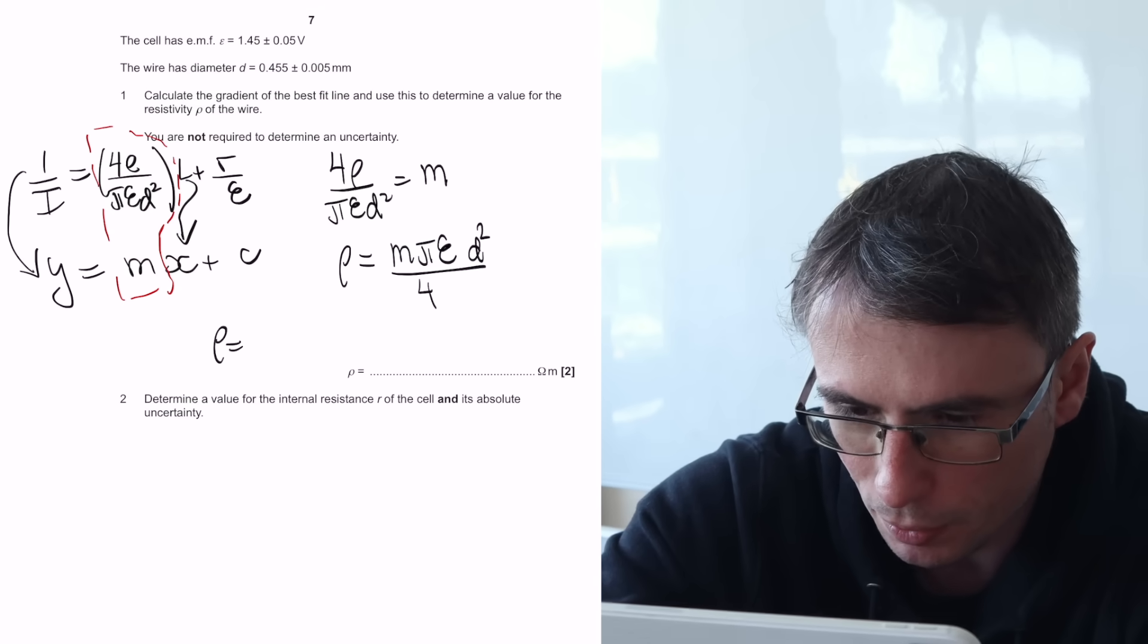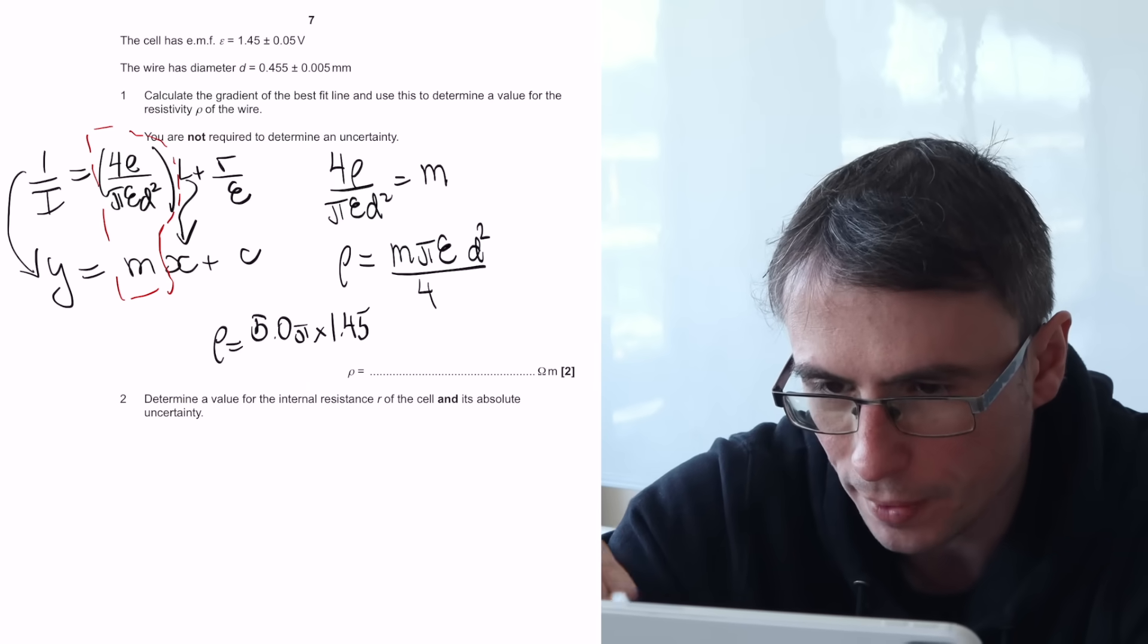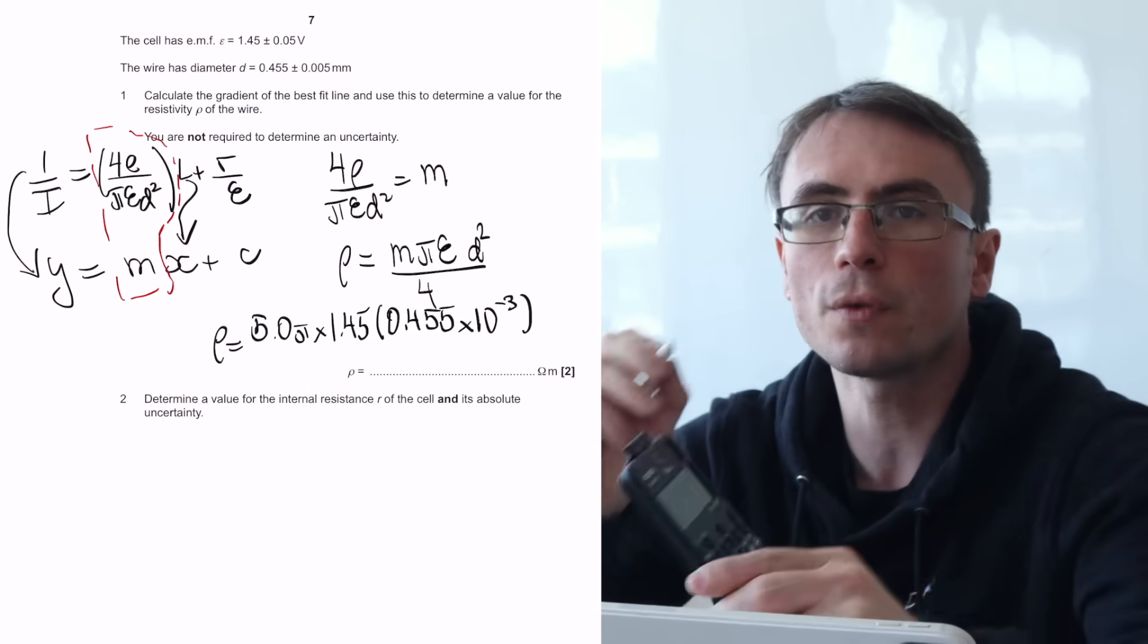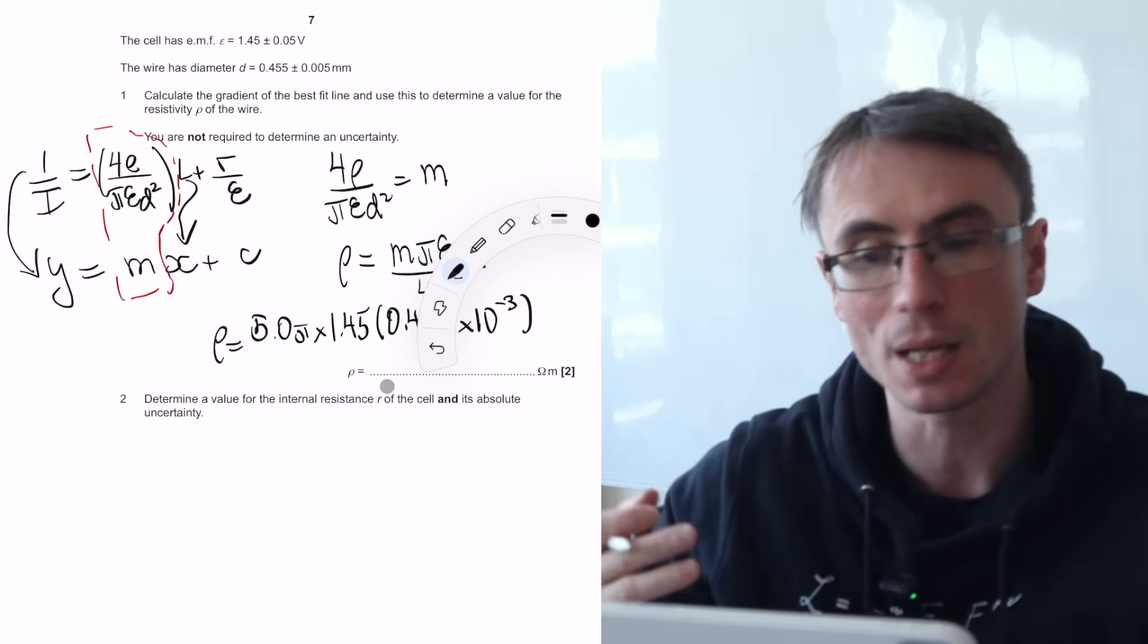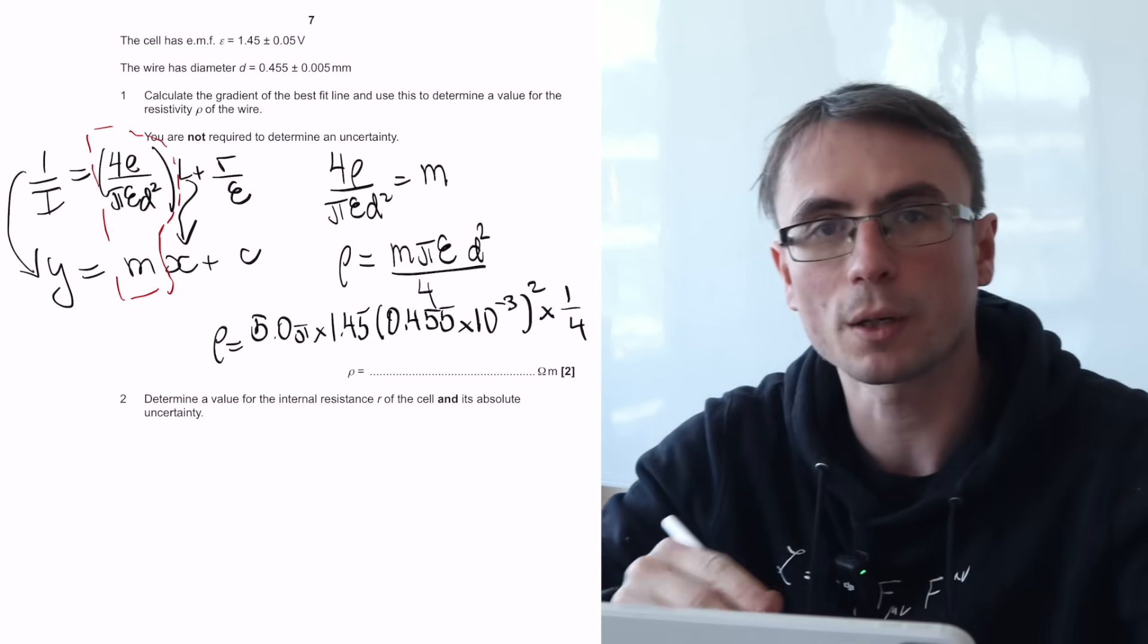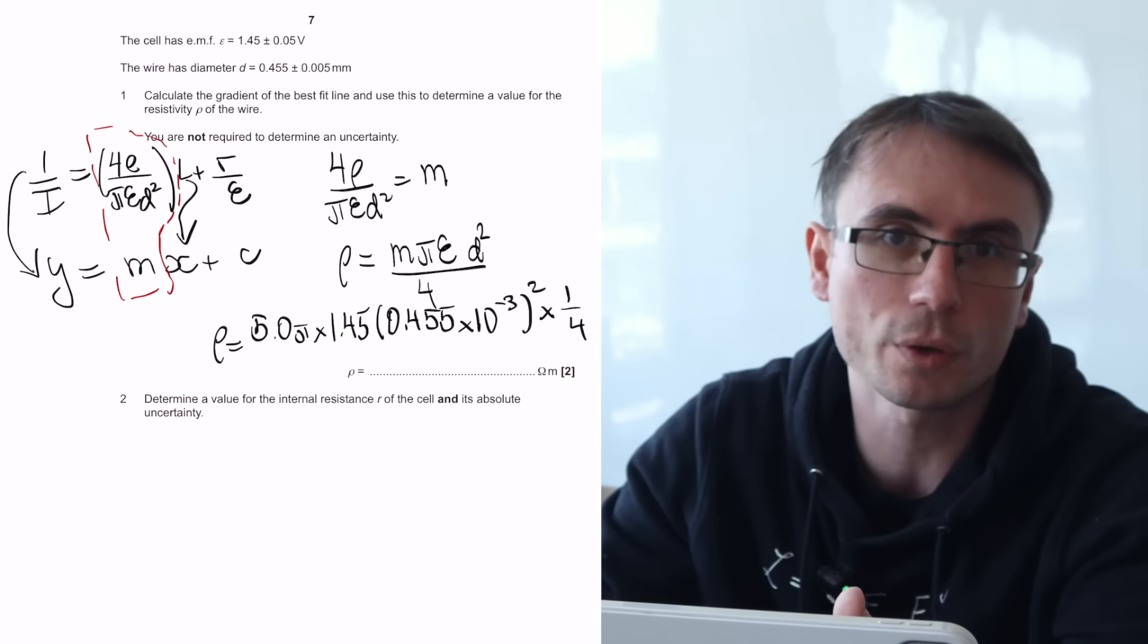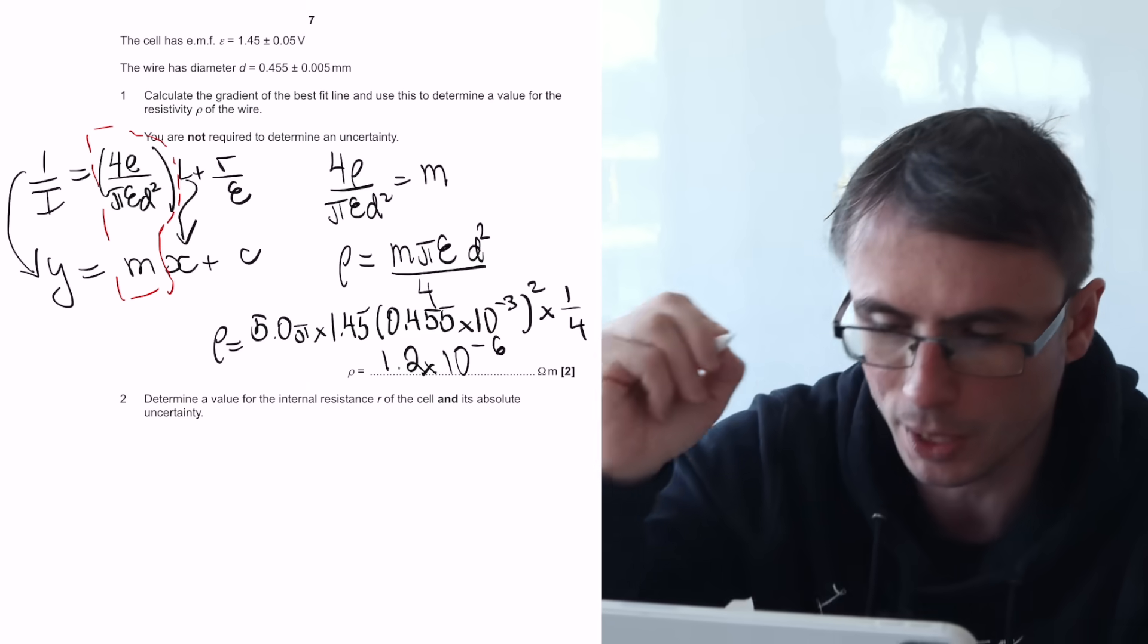Let's substitute some values. So the gradient was 5.0, multiply this by pi. We're given the value of the EMF, which is 1.45. d squared, we have to be careful. It's going to be 0.455 millimeters. So this here will be times 10 to the power of minus 3. To avoid missing out squares, as soon as I see the square, I tend to put a little bracket here and that ends up reminding me not to miss the square when I'm actually inputting this into the calculator. And then divide it by 4, which is the same as multiplying it by a quarter. Also notice how I've done the entire rearrangement. I've not done any other separate calculations other than the gradient, rearranged, plugged in all the values. Now I've gotten the result. This tends to help me minimize errors. And this here is going to give me around 1.2 times 10 to the power of minus 6 ohm meters.